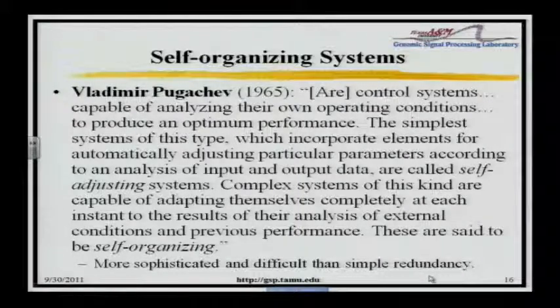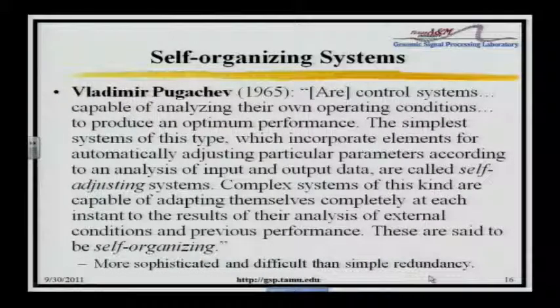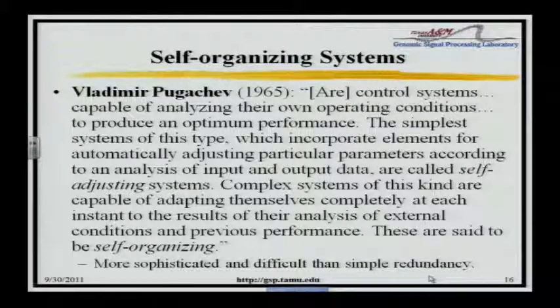Complex systems of this kind are capable of adapting themselves completely at each instant to the results of their analysis of external conditions and previous performance — they can change their logic. These are self-organizing systems. If you look at Waddington and biology understood from that perspective, he was right on the mark. These systems were being developed in the 30s and 40s. Had biology gone the way of Waddington, it would have been much more successful because all the tools needed to study such systems were being developed. But it didn't go that way, and it bypassed vast amounts of machinery which exists to study and represent such systems.